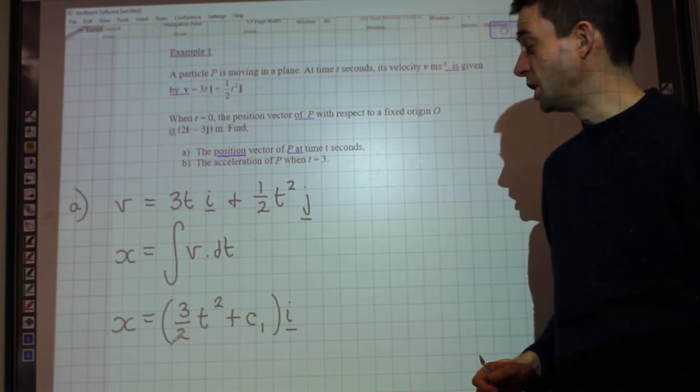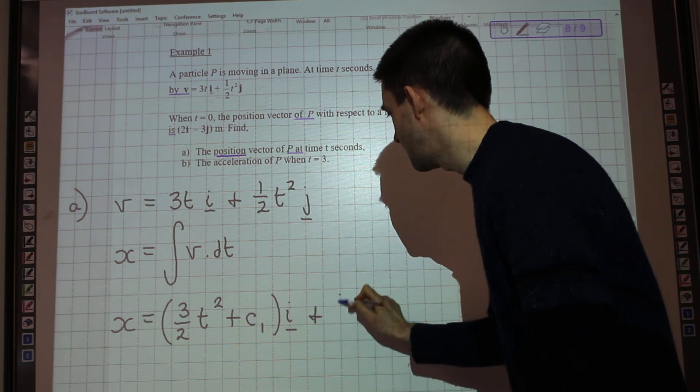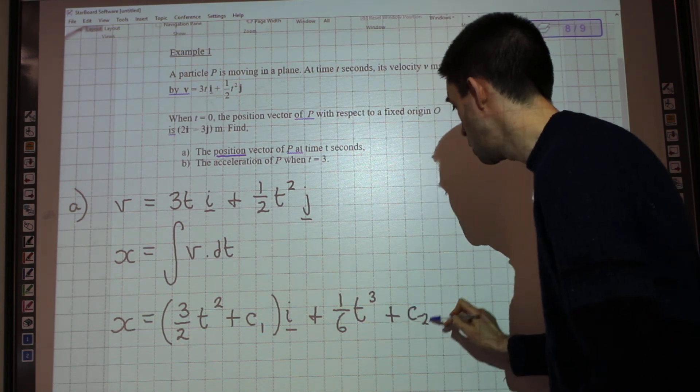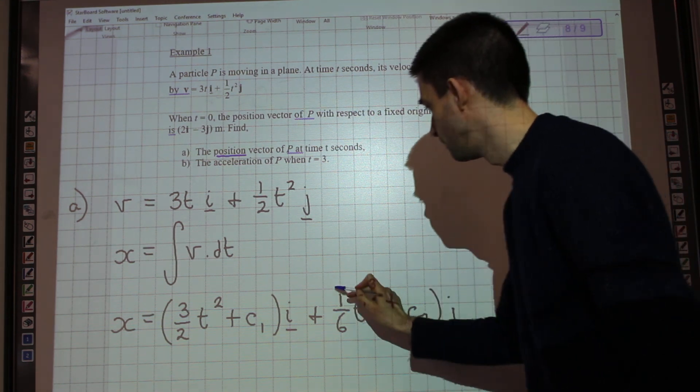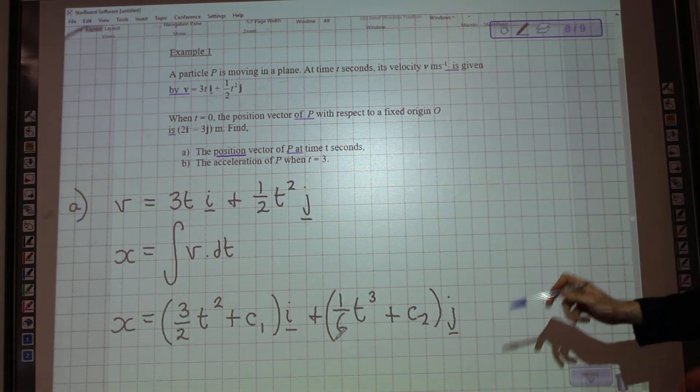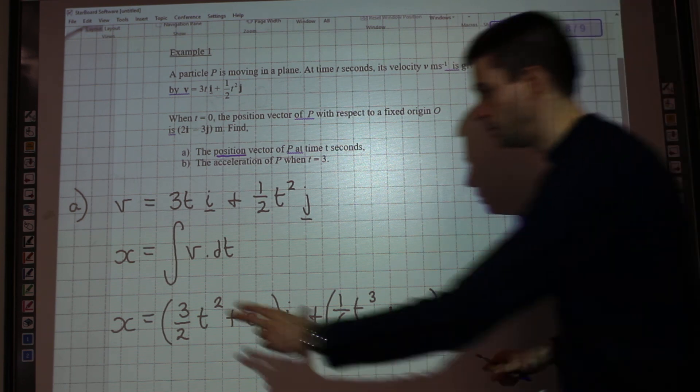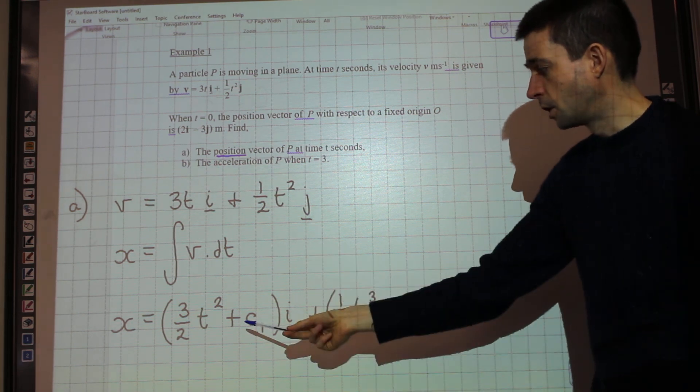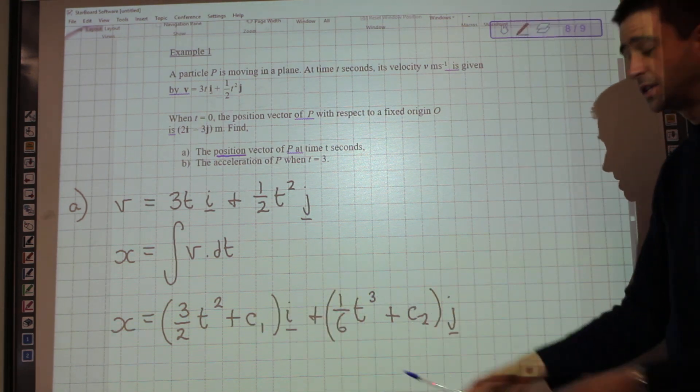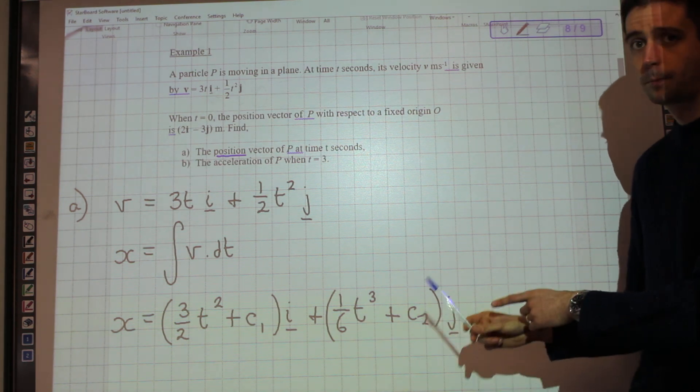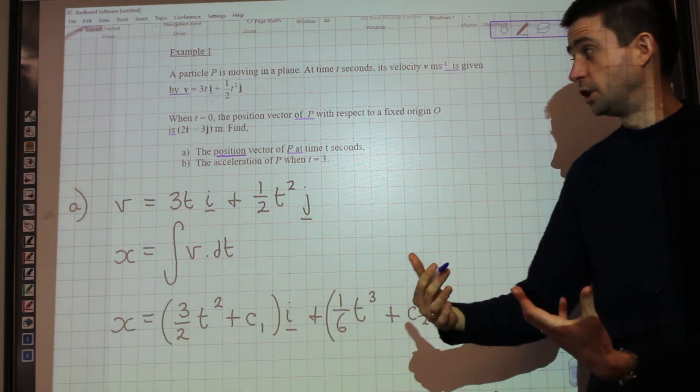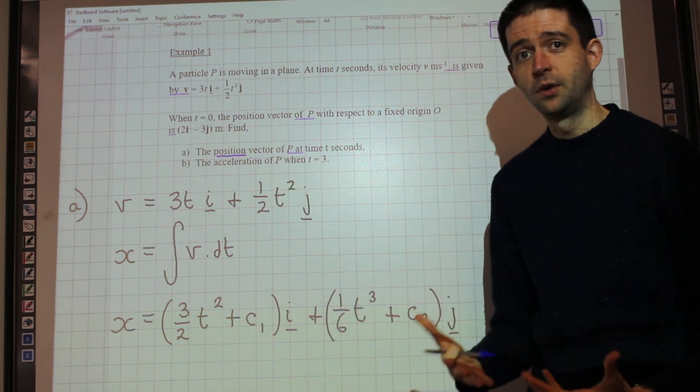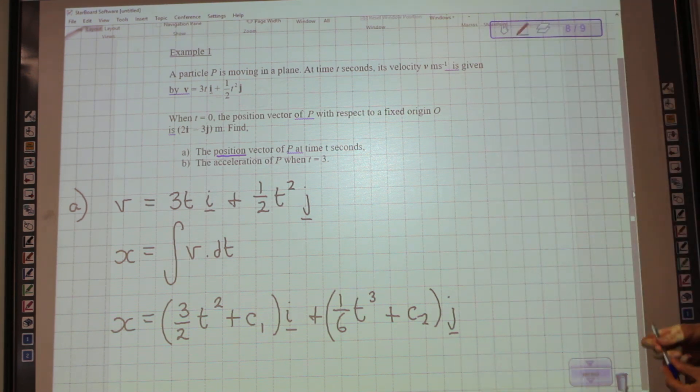I'm then going to integrate the j component, giving me 1 sixth t cubed plus c2j. And what hopefully is becoming clear now is that because we have two things, an i component and a j component that we've integrated separately, the constant of integration for i isn't necessarily the same as the constant of integration for j. So what we now need to do is to move forward to find out what these constants are, because that will give us an expression for the position vector of p at time t seconds.